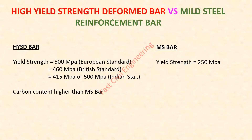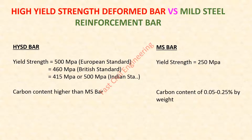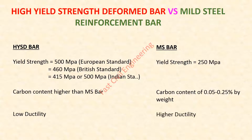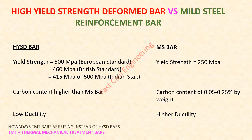High yield strength deformed bars have a higher carbon content than mild steel bars. The carbon content of mild steel bar is 0.05 to 0.25% by weight, while high yield strength deformed bars have greater than this value. High yield strength deformed bars have low ductility, whereas mild steel bars have higher ductility. Ductility means the ability to change shape without fracturing. Nowadays, TMT bars — thermal mechanical treatment bars — are used instead of high yield strength deformed bars.